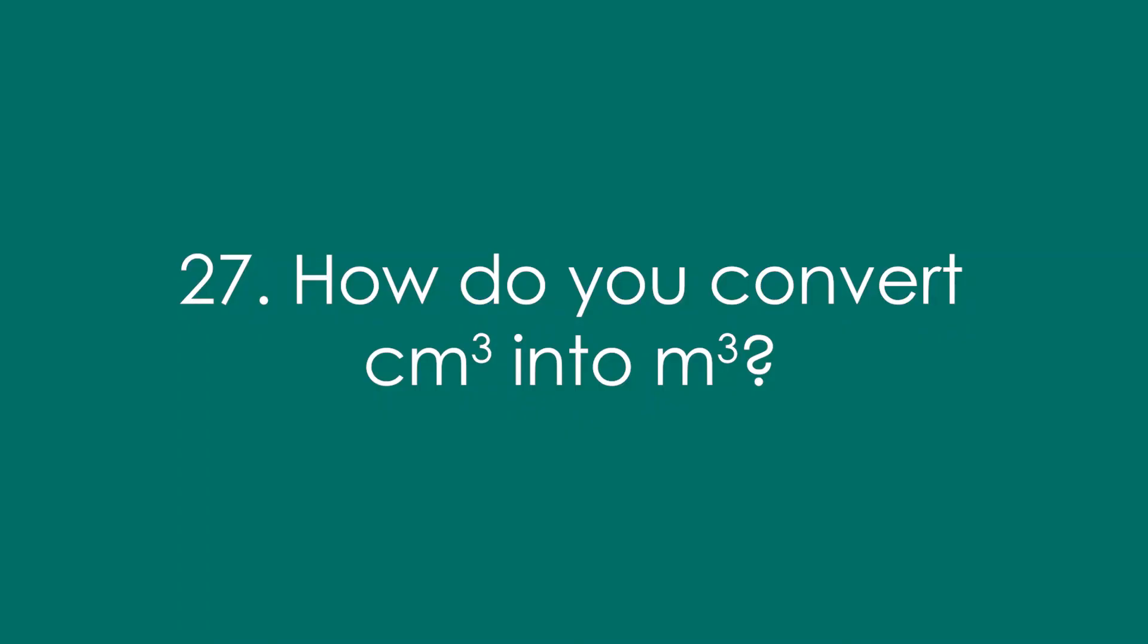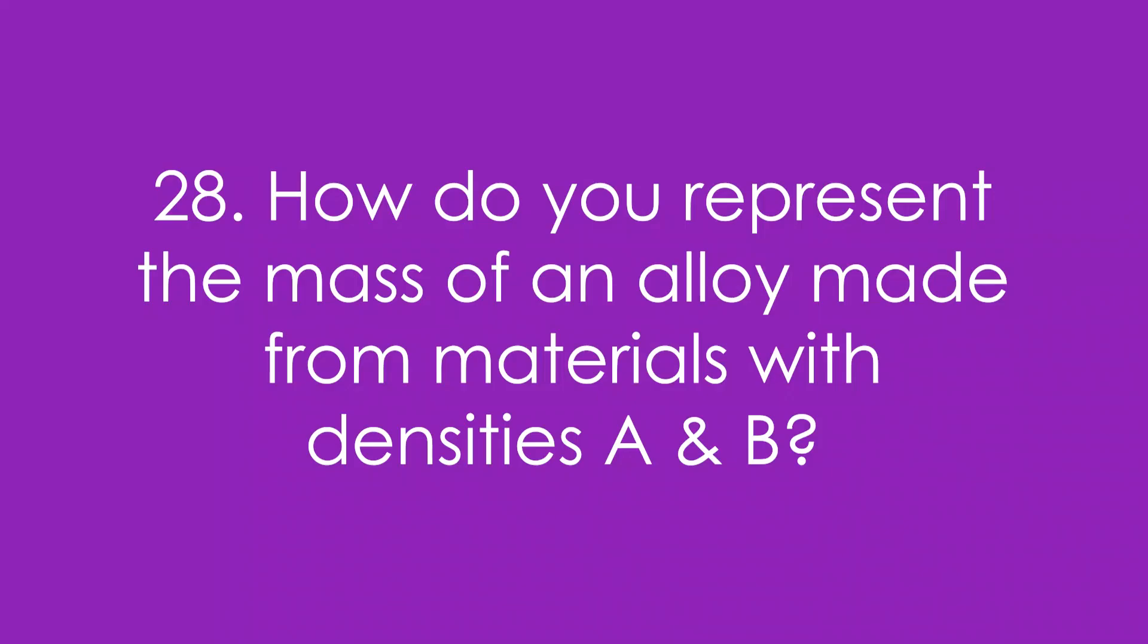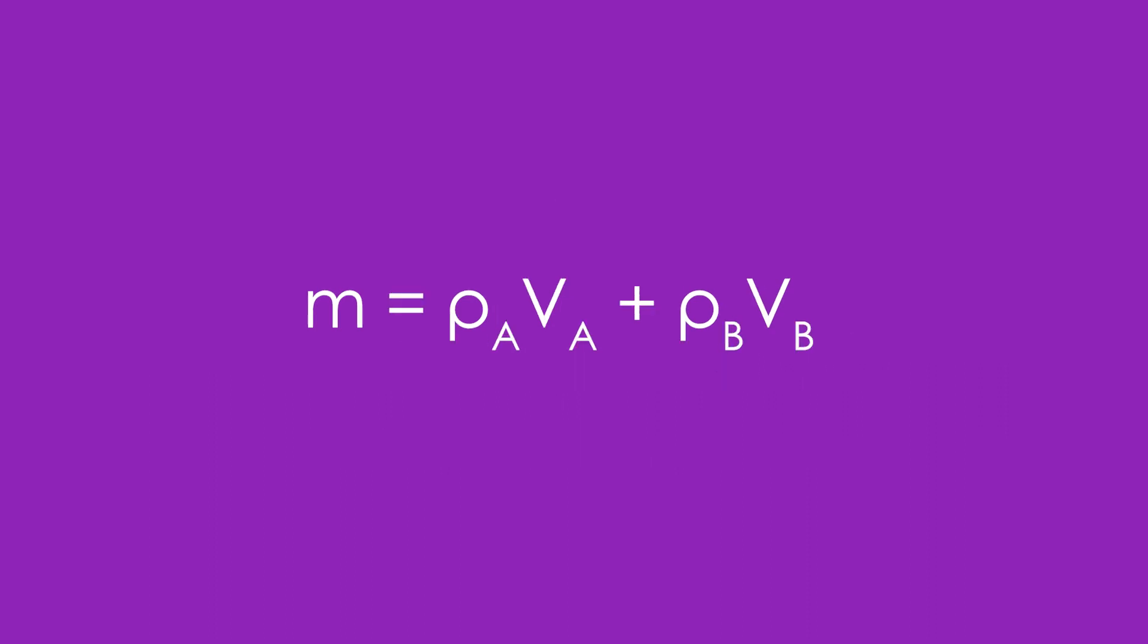Twenty-seven, how do you convert centimetres cubed into metres cubed? You divide by a million, or times ten to the minus six. Twenty-eight, how do you represent the total mass of an alloy made from materials of densities A and B? M is equal to rho A VA plus rho B VB. That's just the mass of the different materials combined.